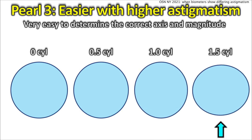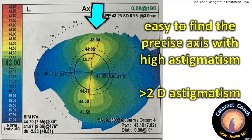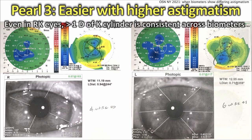At one and a half diopters, look — so obvious. Same with our topographers: if it's a high degree of astigmatism, it's very easy for the topographers and biometers to come up with an exact axis. But if it's a low amount of astigmatism, you only kind of know where the astigmatism is and what the correct axis is. Fortunately, for higher degrees of astigmatism it's easier.